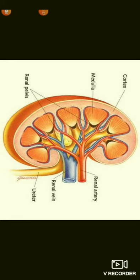The outer margin of the kidney is convex and the inner margin is concave. It is about 10 centimeters long, 6 centimeters wide, and 3.5 centimeters thick. In the middle of the inner concavity is a notch called the hilus or hilum, which leads to a space called the renal sinus.